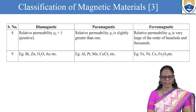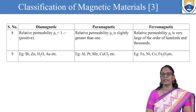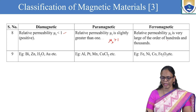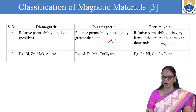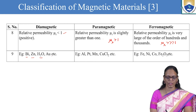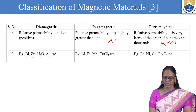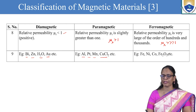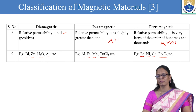Regarding relative permeability: for diamagnetic, mu r is less than 1. For paramagnetic, mu r is slightly greater than 1. For ferromagnetic, mu r is of the order of thousands, much much greater than 1. Examples of diamagnetic materials: bismuth, zinc, water, and gold. Examples of paramagnetic materials: aluminum, platinum, manganese, and copper chloride. Examples of ferromagnetic materials: iron, cobalt, nickel, and ferric oxide.